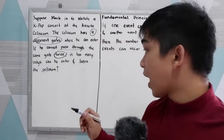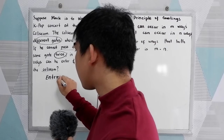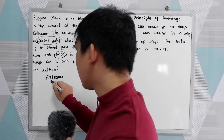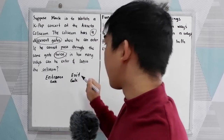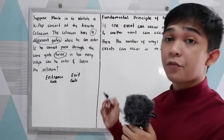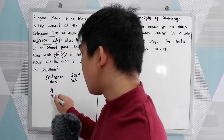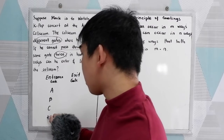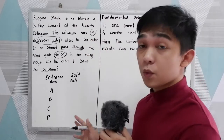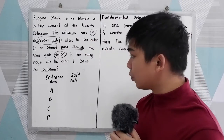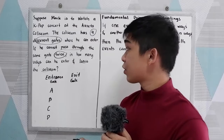So we need to consider the entrance gate and the exit gate. Now we have four different gates — let's call them A, B, C, and D. This method is what we call the listing method, where we list or write all possible outcomes or routes of Mark.